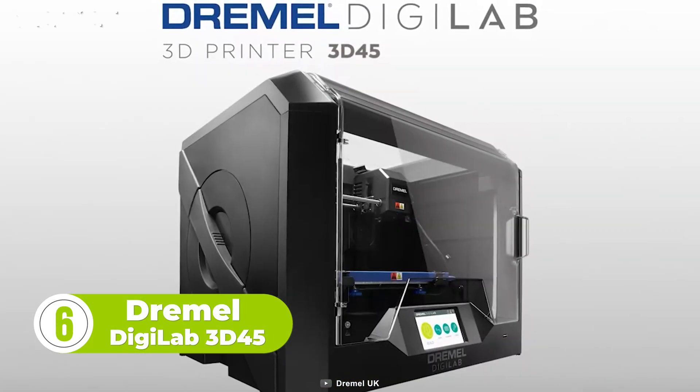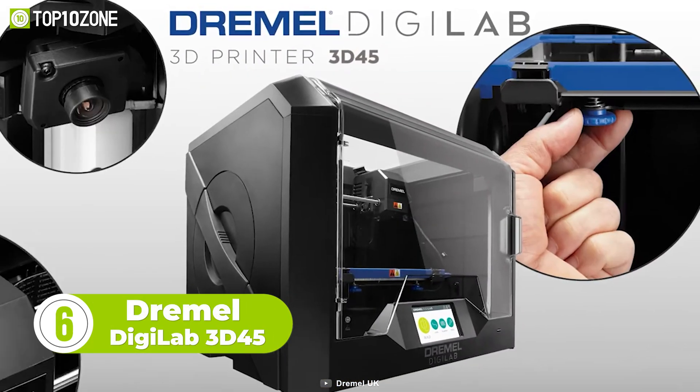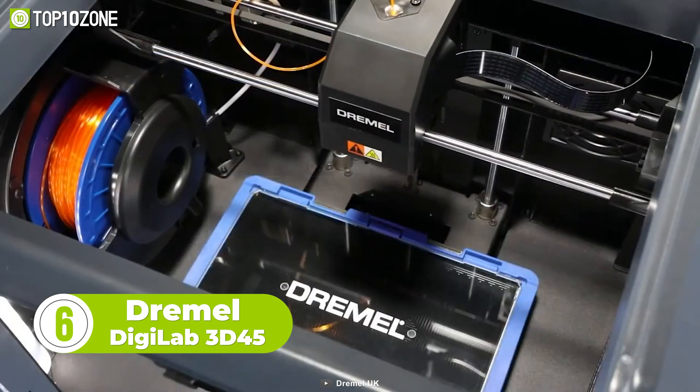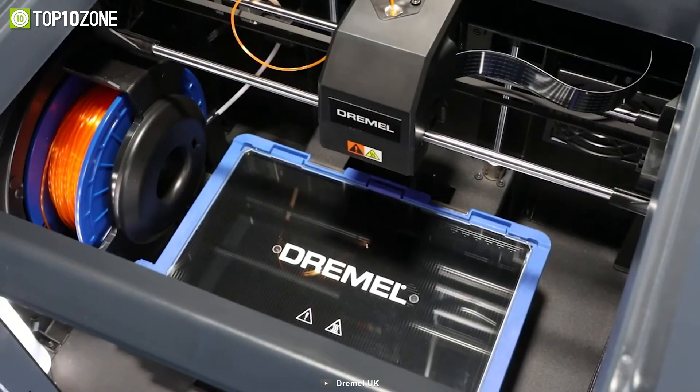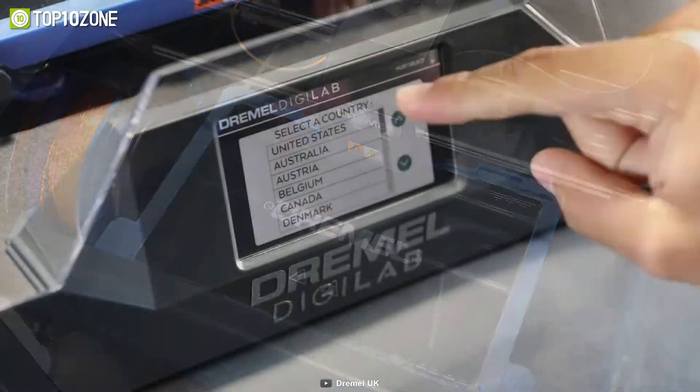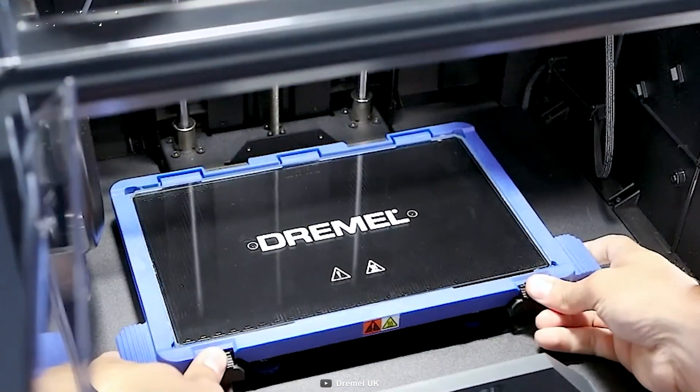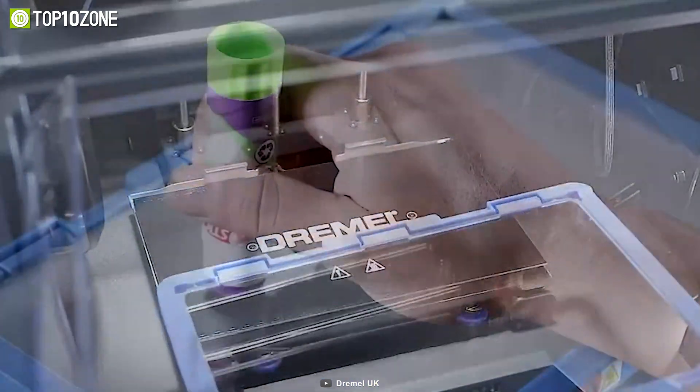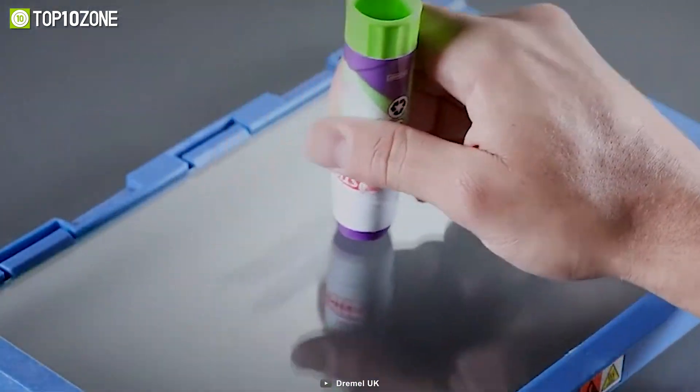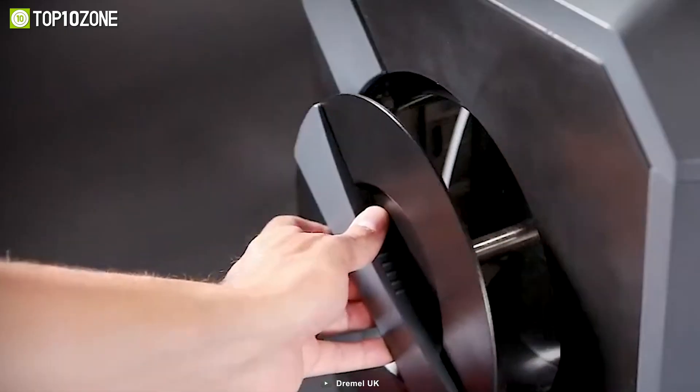A next-level 3D printer that brings the power of advanced FDM 3D printing to your desktop. Yes, we are talking about the Dremel Digilab 3D45. The extruder provides a print resolution of 50 microns, while the filtration system and enclosed design prevent dust particles from entering the printer.